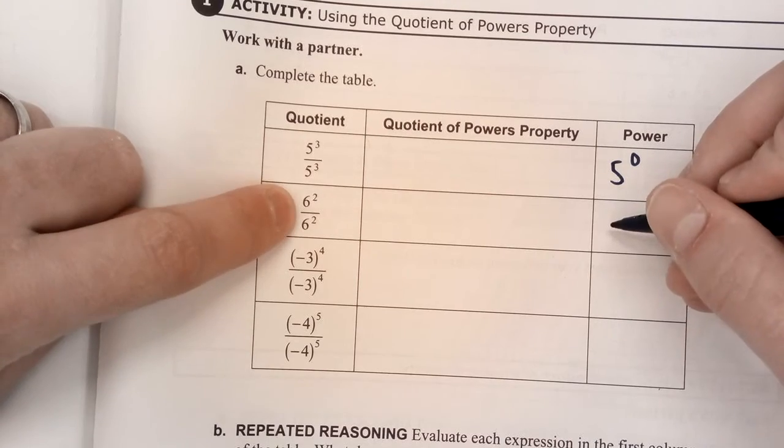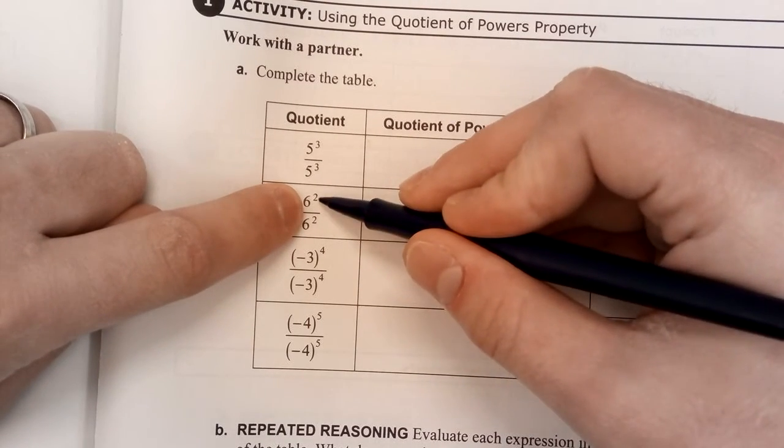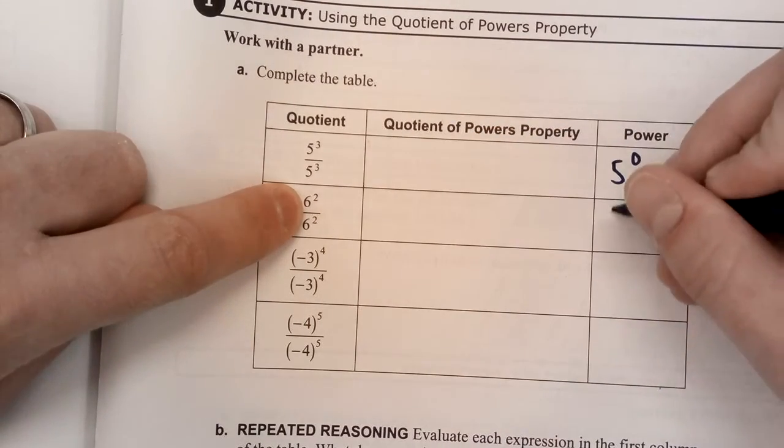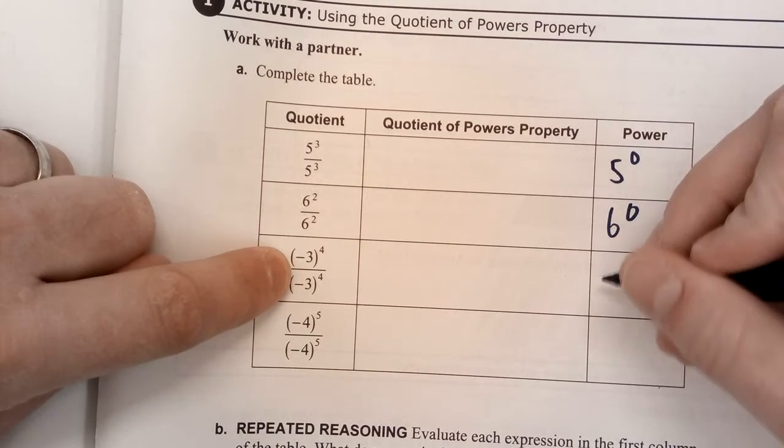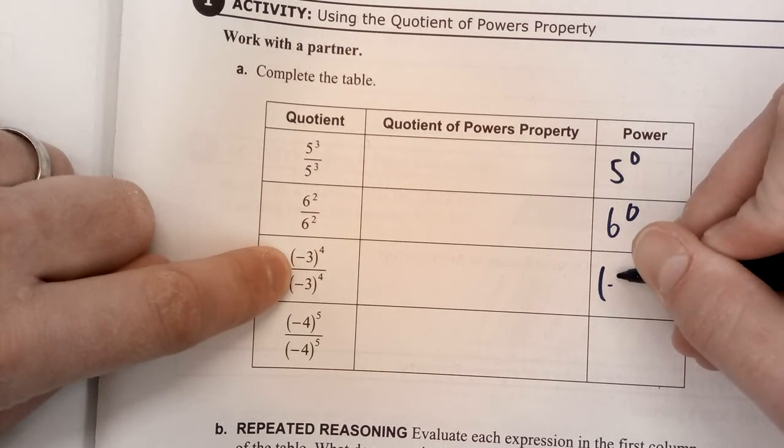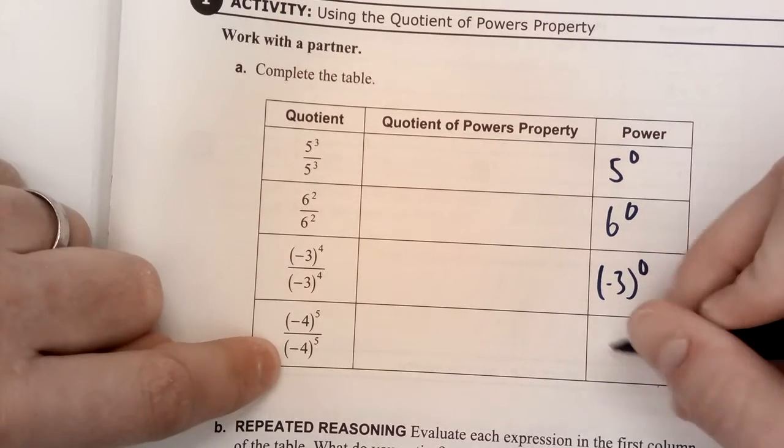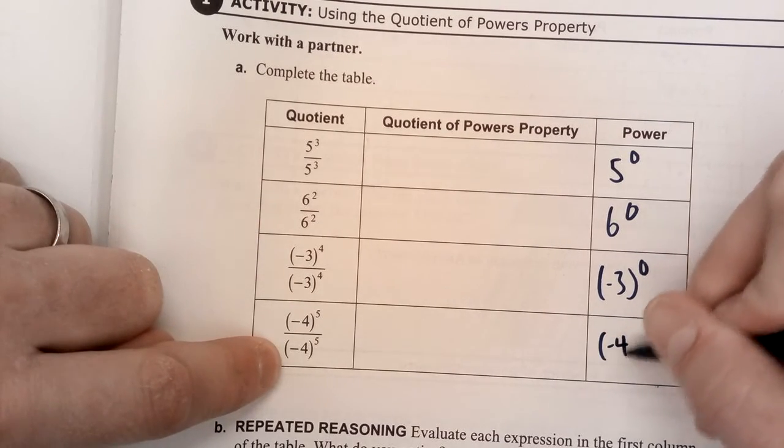So all of these are the same base and the same exponents. So 2 minus 2 is 0, so 6 to the zero. 4 minus 4 is 0, this is negative 3 to the zero. And this is negative 4 to the zero.